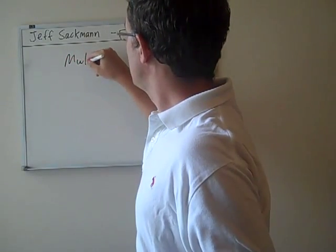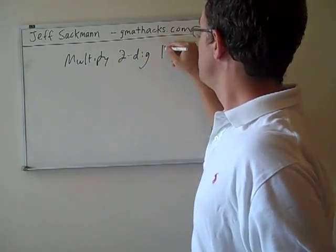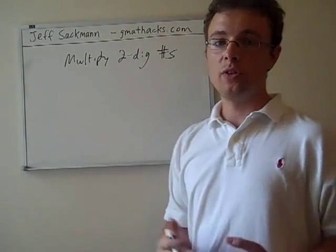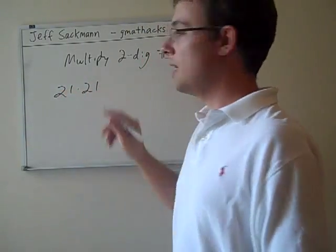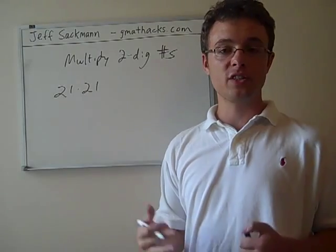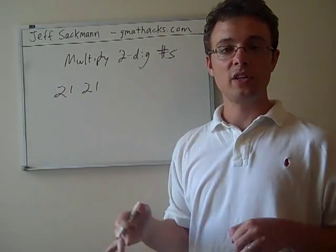We're going to talk about how to multiply two-digit numbers. So let's say you've got something like 21 times 21. If you spent a lot of time memorizing squares, you might already know the answer to this one, but bear with me, pretend like you don't.